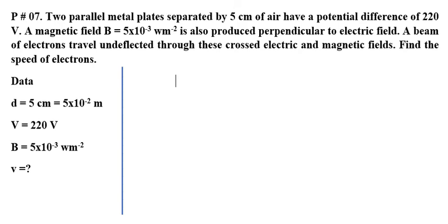यह problem बता रहा है कि दो metal plates को 5 cm separation के थू रखा, उनको potential difference दे दिया 220 volt का. जब इस तरह से हम करेंगे तो उनके दरम्यान electric field produce होगी, बिल्कुल उसी तरह के जिस तरह से parallel plate capacitor में produce होती है. उस electric field के perpendicular हमने एक magnetic field दे दी जो के 5 into 10 to power minus 3 Weber per meter square है.